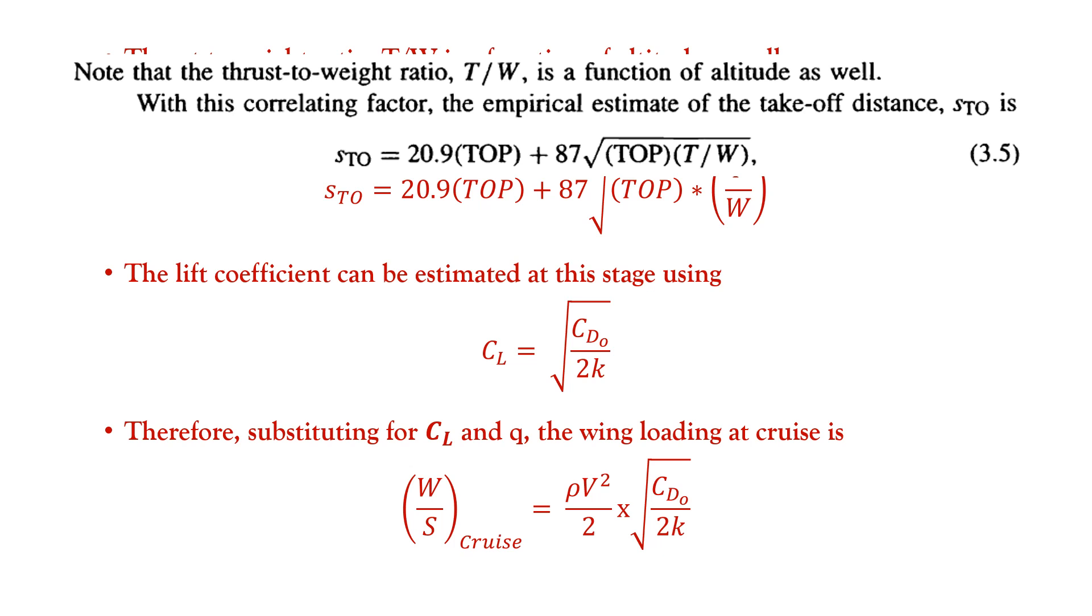So from the previous formulae, now an important fact to be noted here is the thrust to weight ratio T by W is also a function of altitude. So with this correlation factor, the empirical estimation for the takeoff distance STO is represented as 20.9 of TOP plus 87 into square root of TOP times T by W.